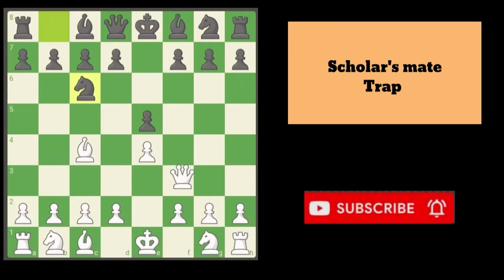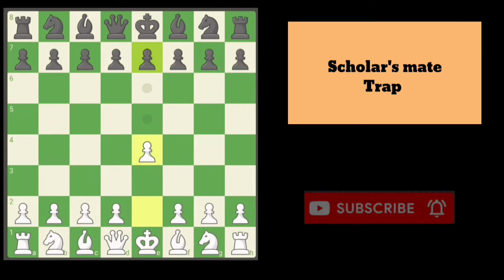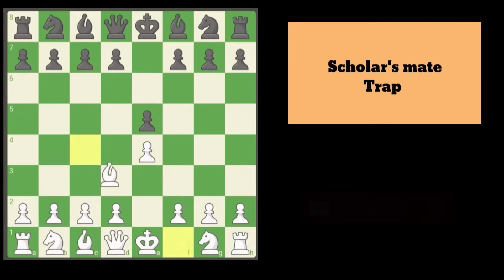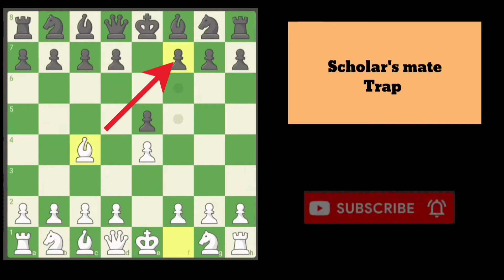Let's see once again: e4, e5, bishop c4 directly attacking the f7 pawn, knight c6 to defend the e5 pawn. But instead of queen h5, queen moves to f3.